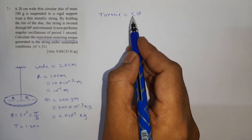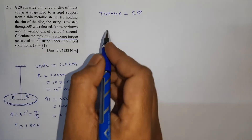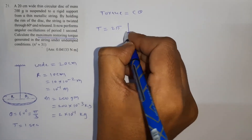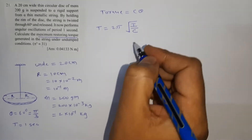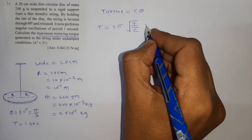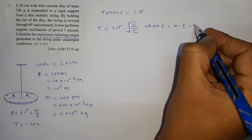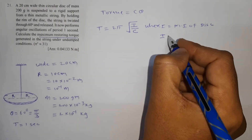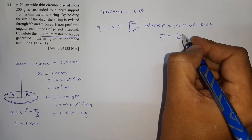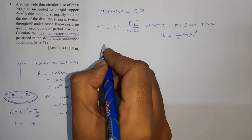The value of c is not directly given, but the period of oscillation is given. The period of angular SHM is T = 2π√(I/c), where I is the moment of inertia of the disc. The formula for moment of inertia of a disc about an axis passing through the center of mass is I = ½mR².